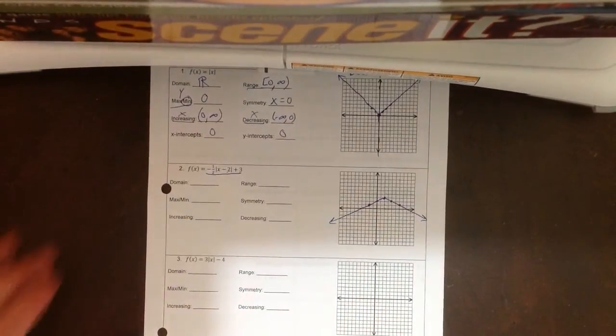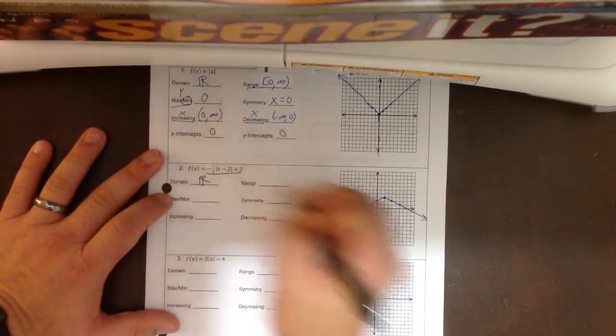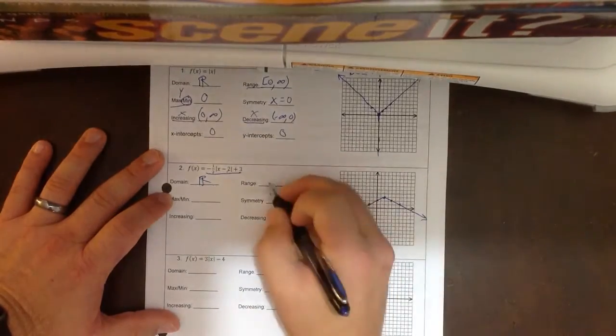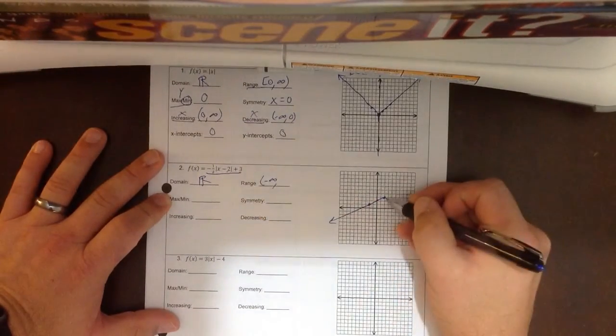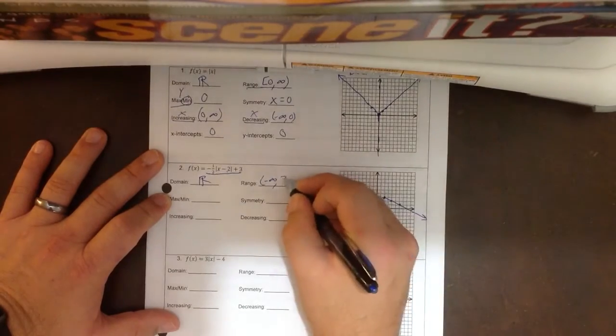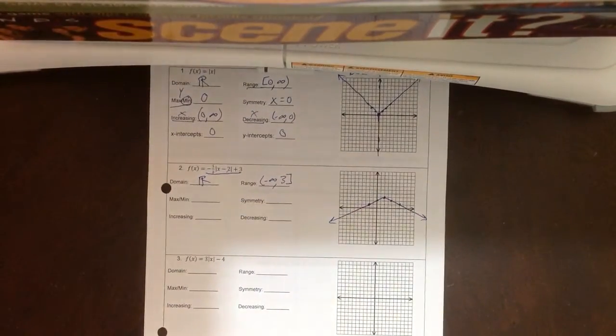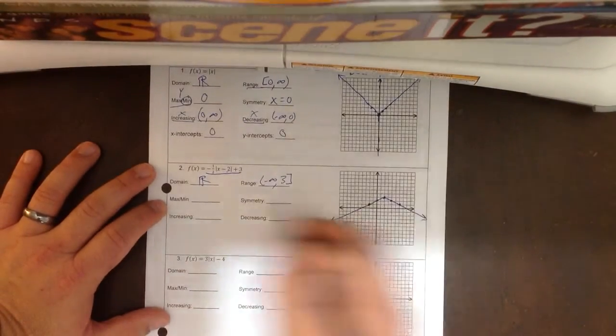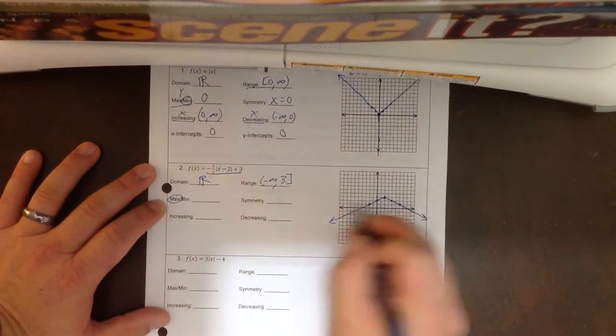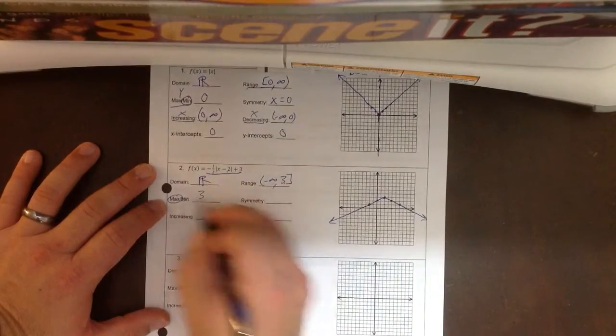There's my graph. Again, domain is all real numbers. On my range, this one's going downward, so it's going to start at negative infinity and work its way up to 1, 2, 3. The highest point is 3. This one is a maximum point. It's the highest point, and it's 3. Again, works off the y.